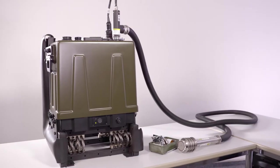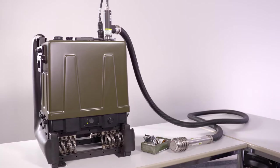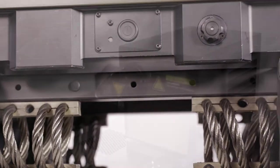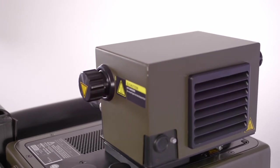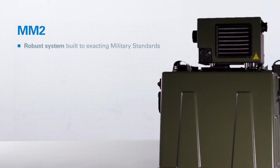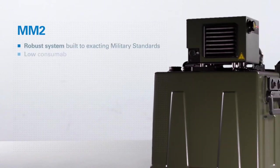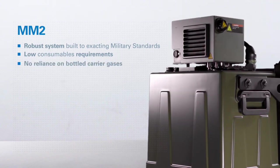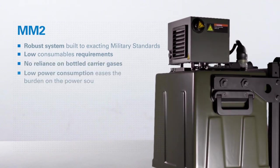The MM2 is a GC-MS capable of identifying thousands of chemical agents and toxic industrial chemicals and has the following key features: robust system built to exacting military standards, low consumable requirements, no reliance on bottled carrier gases, and low power consumption.